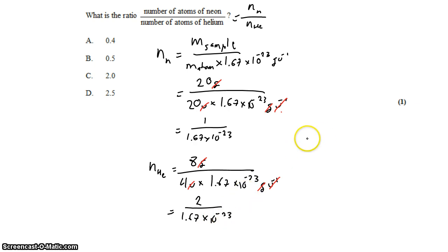So finally, to answer the question, what is the ratio of the number of atoms of neon to the number of atoms of helium? That's 1 divided by 1.67 times 10 to the negative 23, divided by 2 divided by 1.67 times 10 to the negative 23. And that constant cancels. And we get 1 half, or 0.5. So the answer would be B.